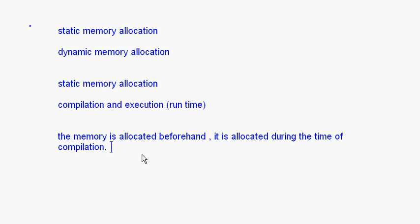So, when I say int num1, num2, num3, the memory is allocated at compile time — each integer occupies two bytes. The number of bytes needed for these integers are allocated during the time of compilation — that is called static memory allocation. Whether I am going to use these variables in my program or not, irrespective of that, the memory is allocated.